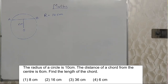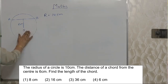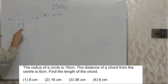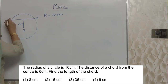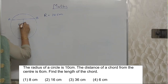Students, read the next sum properly. The radius of a circle is 10 cm. The distance of a chord from the center is 6 cm. Find the length of the chord. They have given radius as 10 cm. I have drawn the circle here. This is O, that is the center of the circle, and from the center, this is a chord AB from which they have drawn a perpendicular.